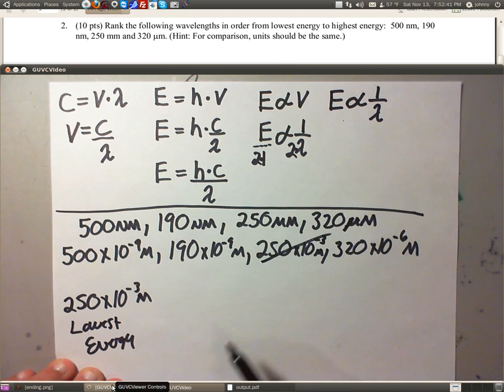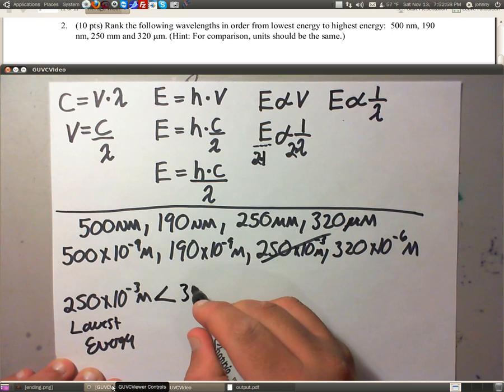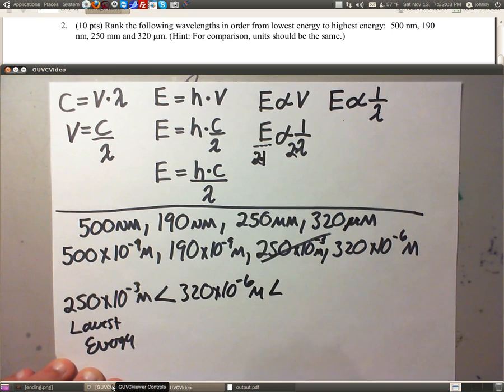After that, the next one that's in line is going to be this 320, because it's a negative 6. So I guess to technically get this correct, I should draw that sign there. That would be less than, remember, this is for energy. Then the next is the 320 times 10 to the negative 6 meters.